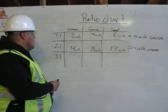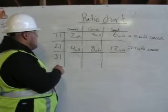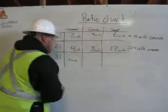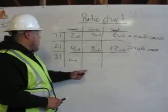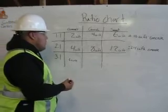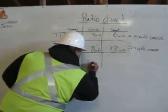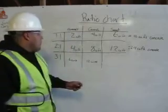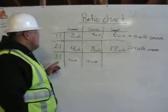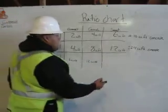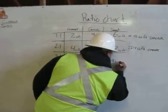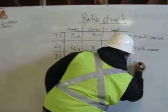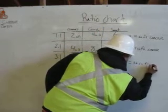Here I have my 3 to 1 ratio. I will multiply 3 times 2, which gives me 6 cubic feet of cement. For my gravel, I will multiply 3 times 4, which gives me 12 cubic feet. And for my last one, I will multiply 3 times 6, which gives me 18 cubic feet of sand. And that equals 36 cubic feet of concrete.